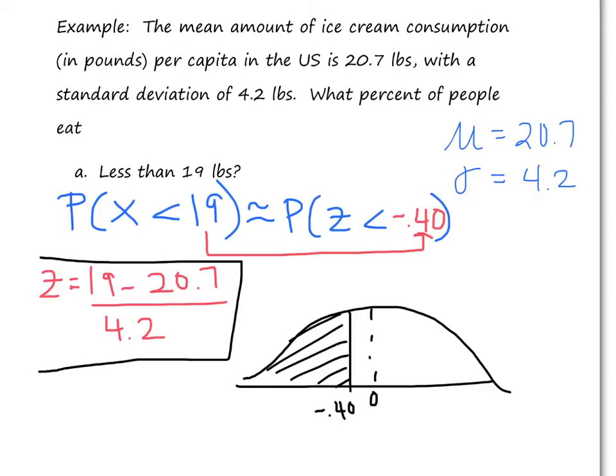The reason I do this for every single example is because then I know if I have the right area or not, the correct area. This area I want to the left of negative 0.40. So if you think about the whole picture is 1. The area of the hole under the curve is 1. So half of it is from 0 and below. So this should definitely be below 50%, meaning my probability should be below 0.50.